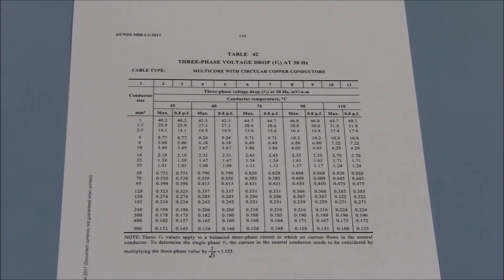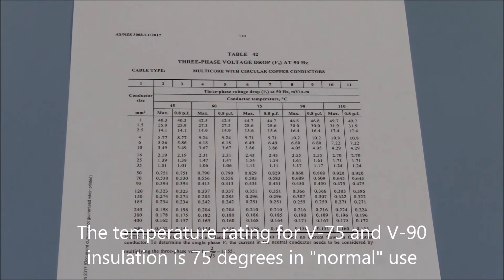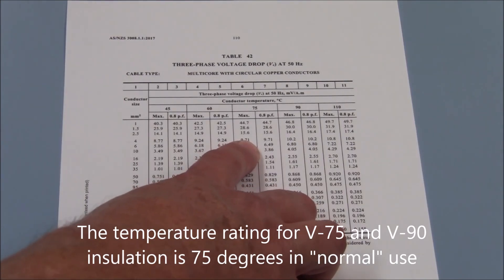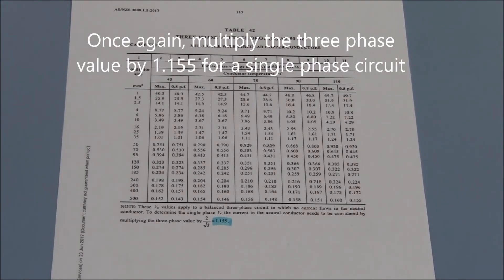Consulting table 42 column 6 for 75 degrees, the value of VC is 9.71. However, as this is a single phase circuit we need to convert this three phase value by multiplying it by 1.155 as per the footnote at the bottom of every voltage drop table.